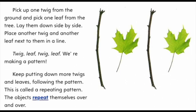Pick up one twig from the ground and pick one leaf from the tree. Lay them down side by side. Place another twig and another leaf next to them in a line. Twig, leaf, twig, leaf. We're making a pattern. Keep putting down more twigs and leaves following the pattern. This is called a repeating pattern. The objects repeat themselves over and over.